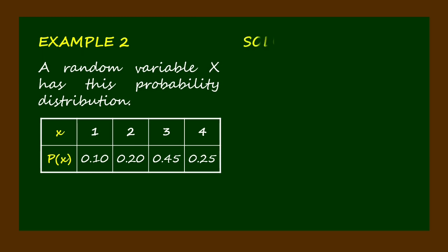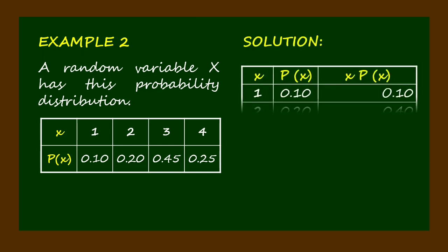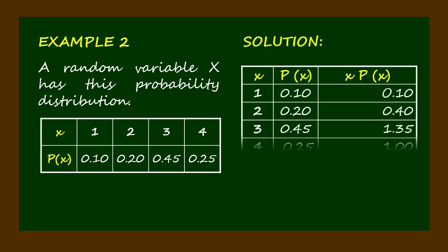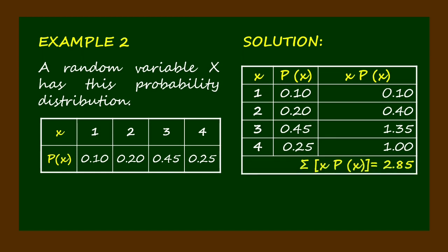Example two: A random variable x has a given probability distribution. The solution is shown in a table where the sum of the products of x and P(x) is 2.85. Thus, the mean or the expected value of the given random variable is 2.85.